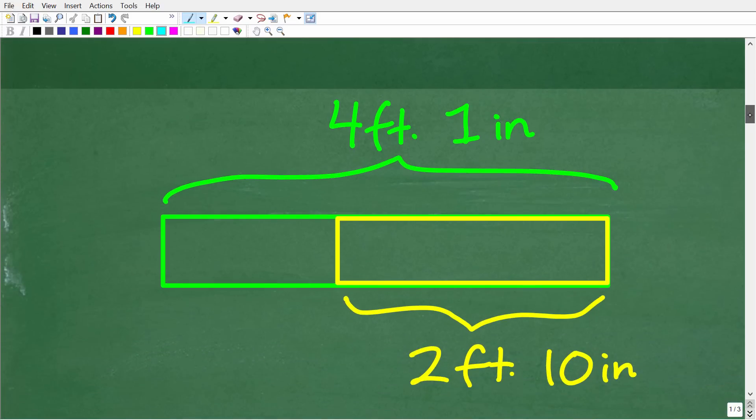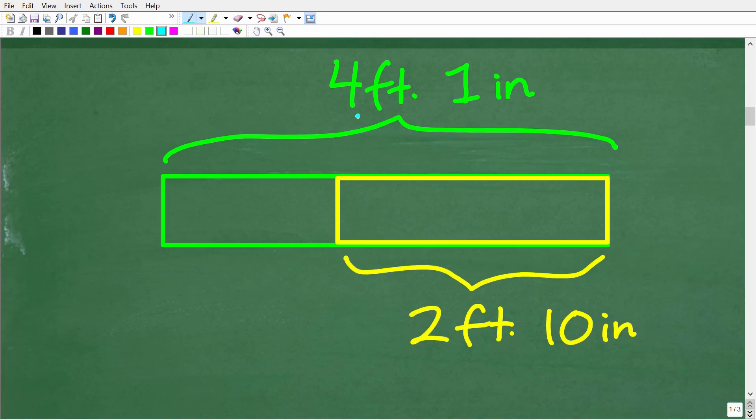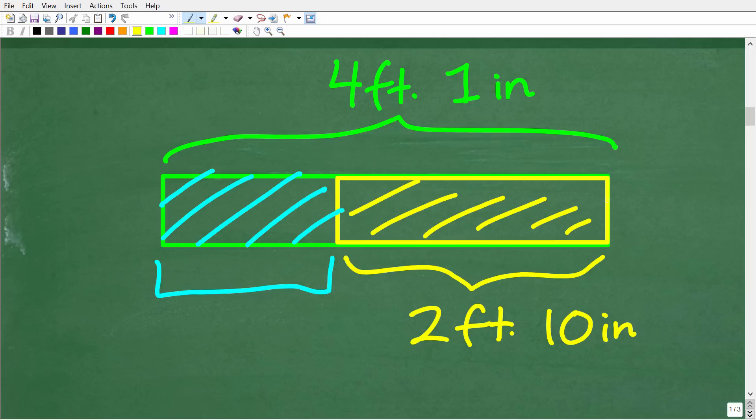So let's suppose we had a piece of wood, a board that was 4 feet 1 inch long, and we want to take away or cut off 2 feet 10 inches. So what the question really is asking is how much remains, what is the length of this remaining piece right here after we cut off this piece right here. So this is kind of a visual interpretation of the problem.